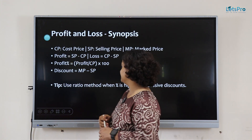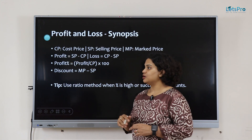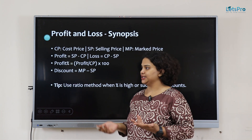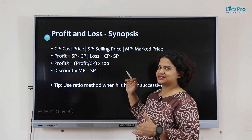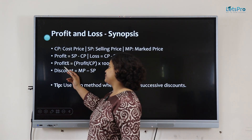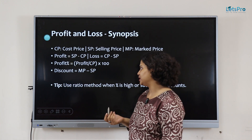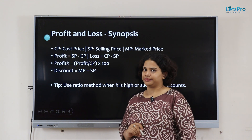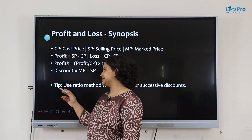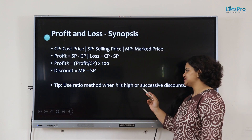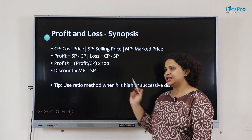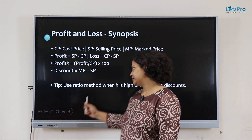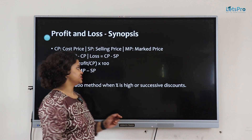Profit is equal to SP minus CP. What is loss? Loss is cost price minus selling price, for example with secondhand goods. Profit percentage is profit divided by CP into 100. What is discount? It is the marked price minus the selling price. The tip is: use the ratio method when the percentage is high or for successive discounts. Always use ratios.